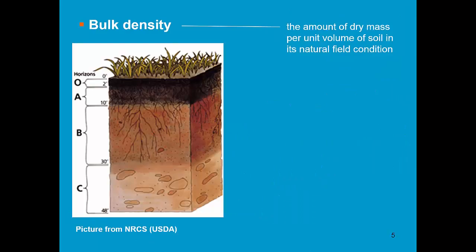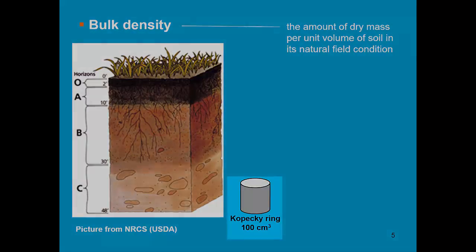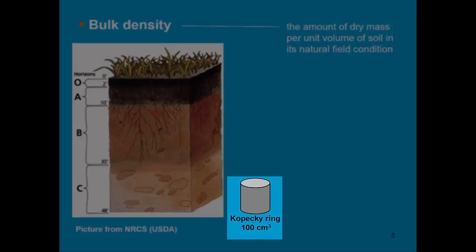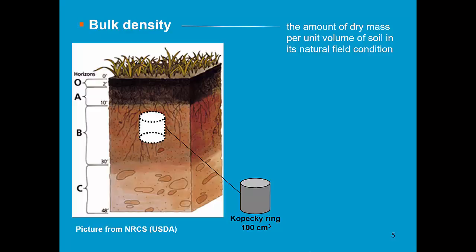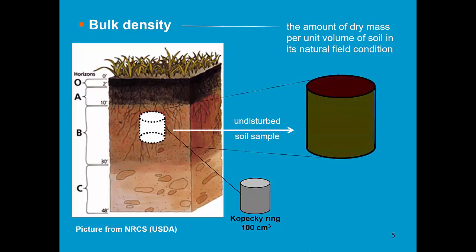The bulk density is the amount of dry mass per unit volume of soil in its natural field condition. We have to sample the soil in its natural field condition, which we will do with a steel ring that has a volume of 100 cm³. We go to the field and gently push it in the soil profile to obtain an undisturbed soil sample.